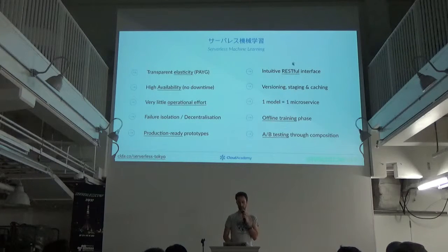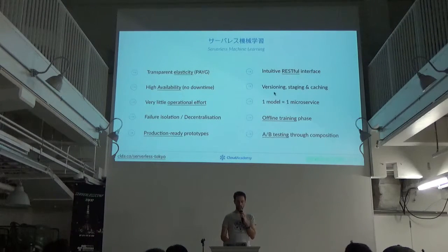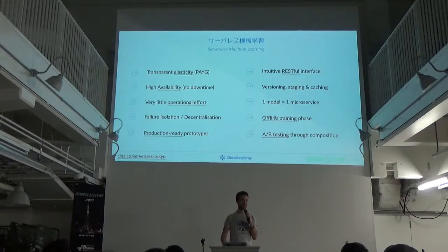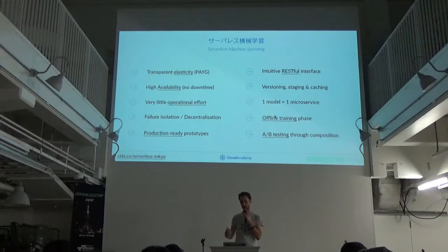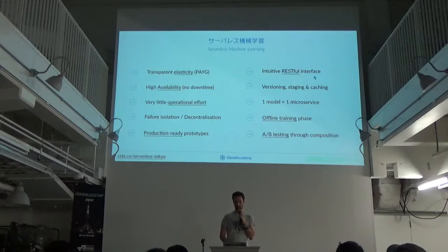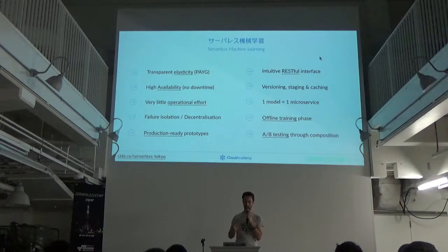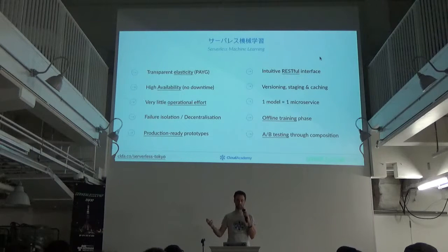In the configuration we developed, you can think of one model corresponding to one microservice, which is a Lambda function in our case. We get versioning, staging, and caching for free — meaning we don't have to implement it. We went for an offline training phase, meaning we do everything we need offline. Once you have trained and tested the model locally, you can just publish it online and it will work. We also like to A/B test our models because choosing one single model and configuration is most of the time a blind guess or quite empirical. So you want to A/B test many different variations or completely different types of mathematical models — A/B testing is really a feature we needed.